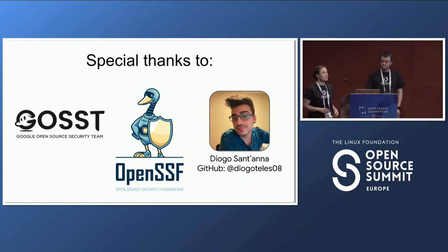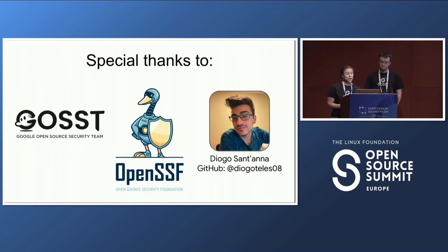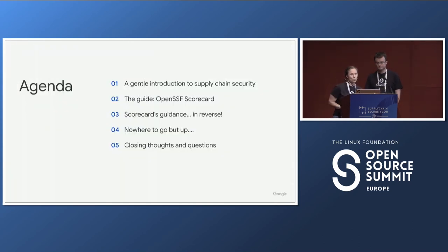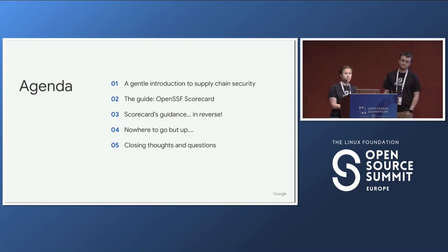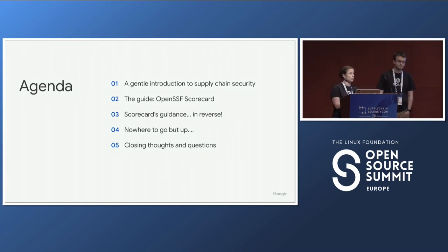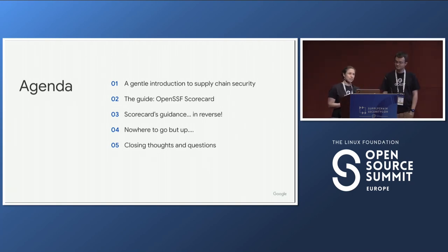Some thanks first — this talk has grown out of many people's efforts. All of our team has contributed to the tooling we're talking about today, and those tools are supported by the Open Source Security Foundation, which is a cross-industry collaboration. We also want to call out especially our teammate Diogo Santana, who contributed to crafting the story we're talking about today. We'll start with an explanation of supply chain security, talk about a tool called Scorecard, and discuss how we used it first to purposefully make a project as insecure as possible so that we could then improve it. We'll share a couple lessons and leave time for questions.